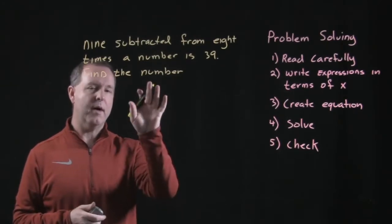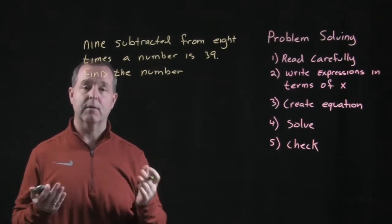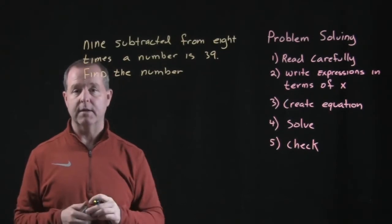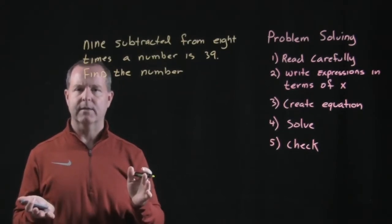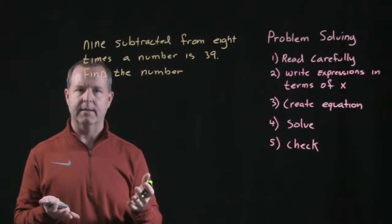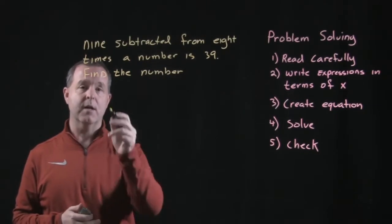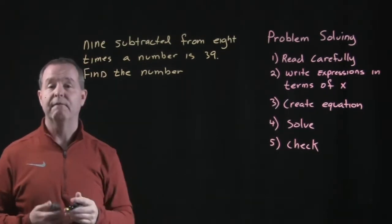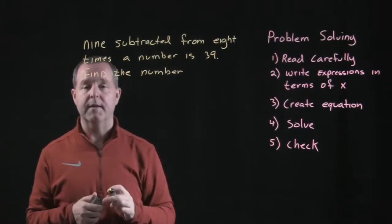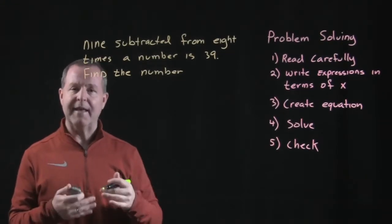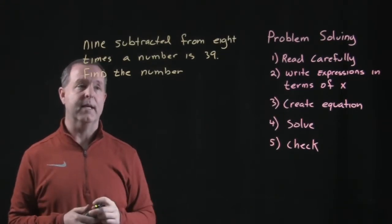Read it carefully. Now I want to try to write expressions in terms of x. And the first thing to do is, what is x? What's the unknown in this process? Well, it tells us the unknown is, it asks us in the question, find the number. We don't know what the number is, so that's our variable. That's our unknown in this particular case.